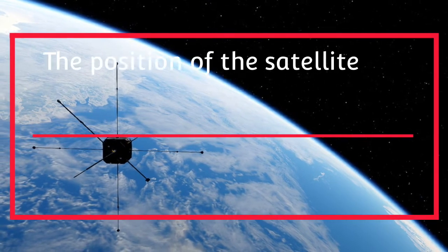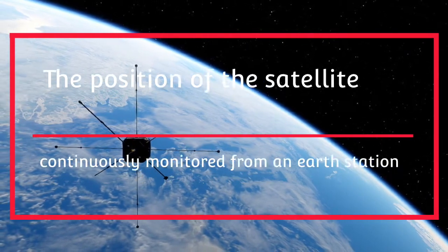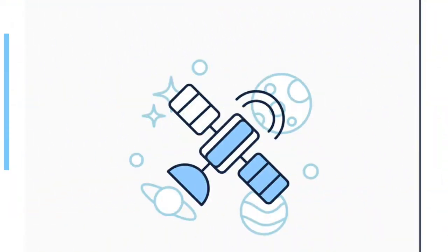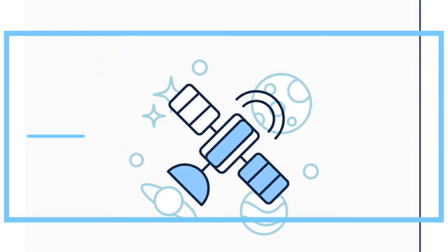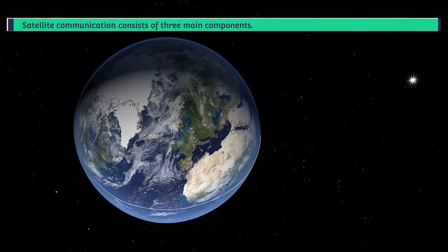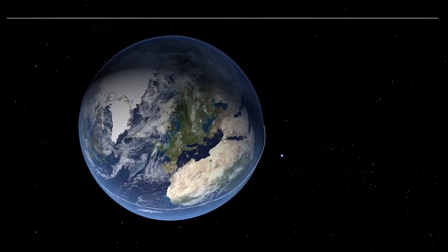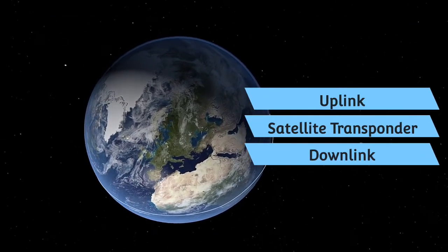The position of the satellite is continuously monitored from an Earth station. Apart from the position controls, the Earth station also monitors the satellite's health and speed. Satellite communication consists of three main components: uplink, satellite transponder, and downlink.